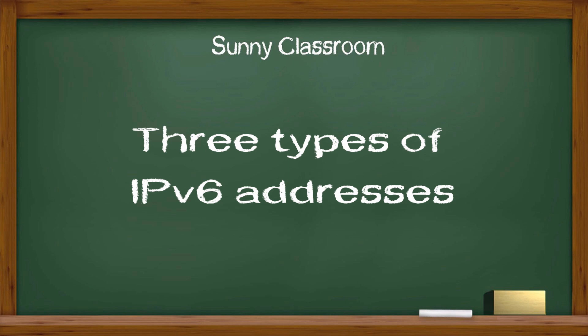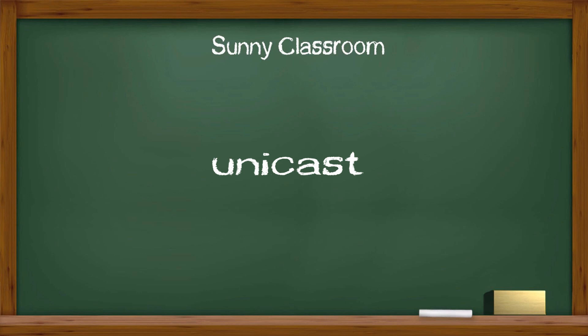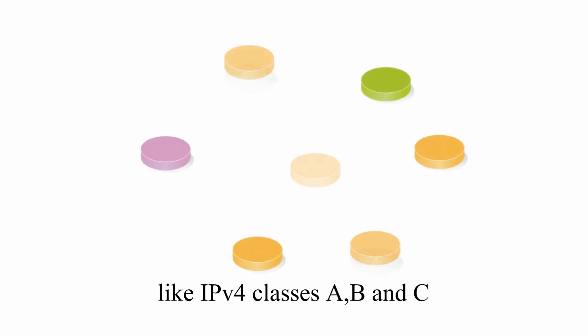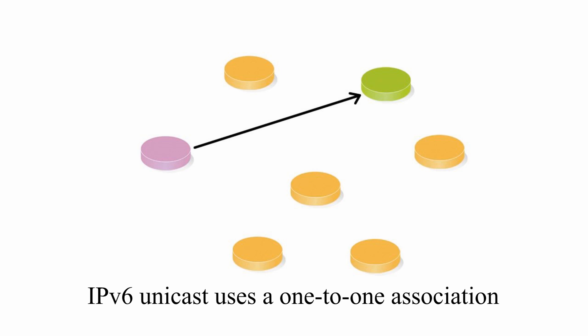There are three types of IPv6 addresses: unicast, multicast, and anycast. Like IPv4 classes A, B, and C, IPv6 unicast uses a one-to-one association between two individual devices.